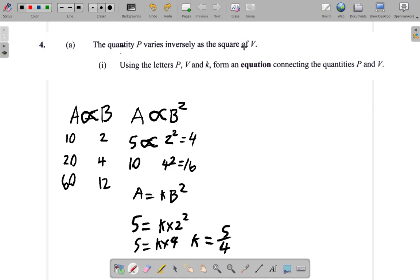Alright, so using that principle and coming to this situation, the quantity P varies inversely as the square of V. P varies inversely, which means you will not have V over here. Here we'll have 1 over V. P varies inversely as the square of V: 1 over V squared.